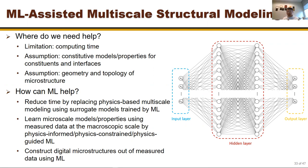Second, machine learning can replace unknown or uncertain constitutive assumptions. Hooke's Law is really just the simplest linear assumption — we assume stress and strain are linearly related, but we don't necessarily know that's true. Based on experimental data, machine learning can learn what the relationship actually is. Third, machine learning can help characterize the geometry and topology of microstructures — real microstructures may not match our idealized models, and machine learning can recover those details.